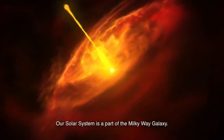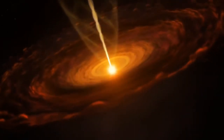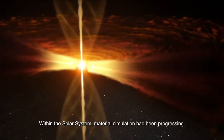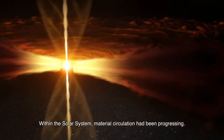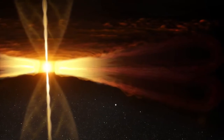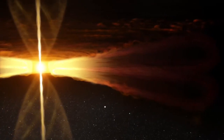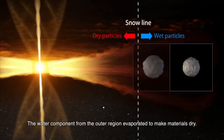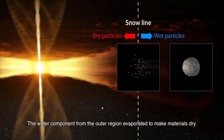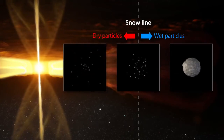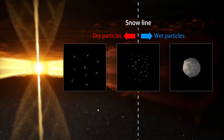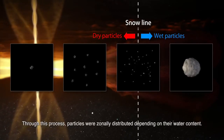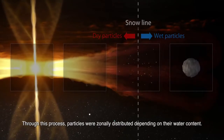Our solar system is a part of the Milky Way galaxy. Within the solar system, material circulation had been progressing. The water component from the outer region evaporated to make materials dry. Through this process, particles were zonally distributed depending on their water content.